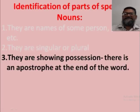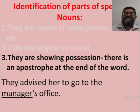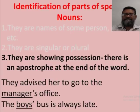Nouns can also show possession — there is an apostrophe at the end of the word. For example: 'They advised her to go to the manager's office.' The apostrophe shows possession of manager to office, so manager is a noun. 'The boy's bus is always late.' Boys has an apostrophe showing possession, so boys is also a noun.